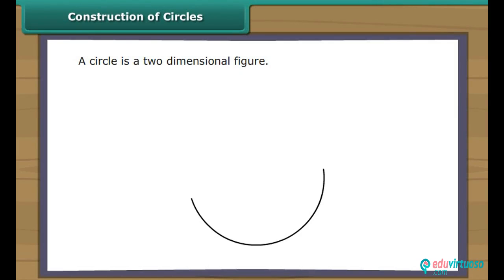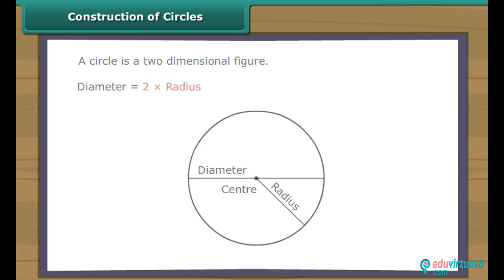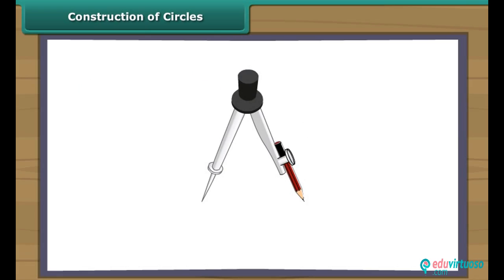Construction of circles. A circle is a two-dimensional figure. Every circle has a centre. The distance between the centre and the boundary of a circle is known as its radius. The line segment through the centre of a circle with its end points touching the boundary is known as the diameter of the circle. The diameter of a circle is twice its radius.